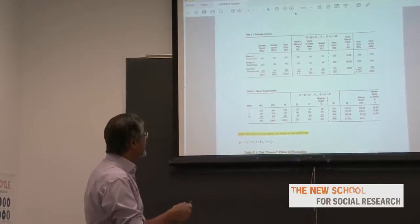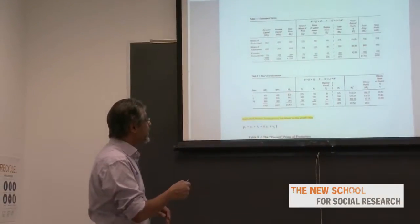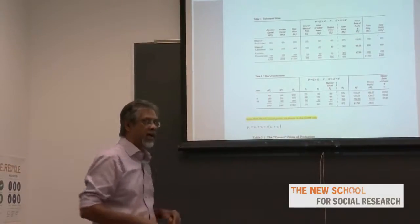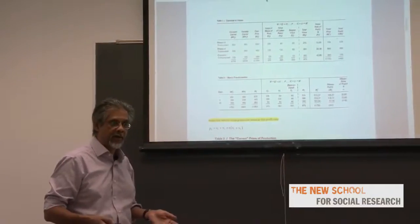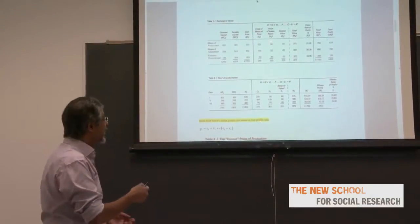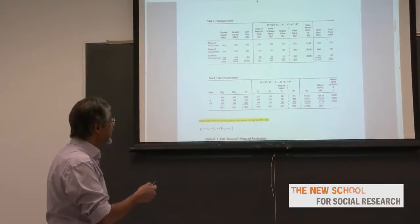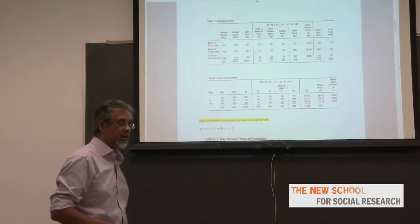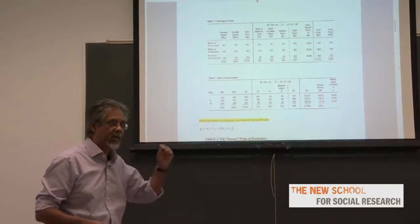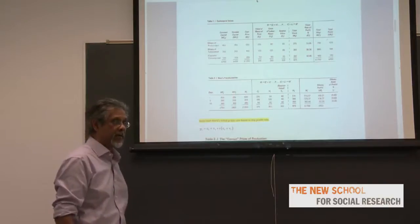I'm talking here in money terms because I wanted to emphasize that prices proportional to labor values does not imply equality. Prices are in units of pounds or dollars and labor values in units of hours. The total labor value is constant capital plus variable capital plus surplus value. The total value is the sum of the three — in the first sector it's 375. The profit rate is 19% here because the organic compositions are unequal. So if prices are proportional to labor values, the different sectors will have different profit rates.